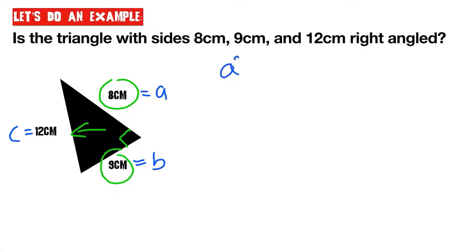So if we've got A squared plus B squared is equal to C squared. We're going to do the following. We're going to do 8 squared plus 9 squared, and that should equal to 12 squared. So let's see if this works. 8 squared is 64. 9 squared is 81, and that should equal to 12 squared, which is 144.